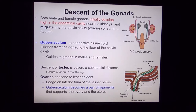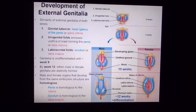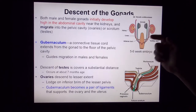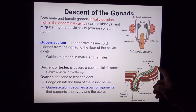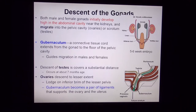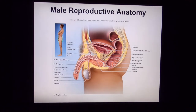Development begins way up near the kidneys, so parts must migrate a long way. On the male side, a structure called the gubernaculum guides the testes from near the kidneys, out through the inguinal rings, and down into the scrotal sac. This descent occurs at about seven months gestation. In females, the gubernaculum becomes ligaments that help hold the ovaries and uterus in place — an interesting shared anatomical origin.